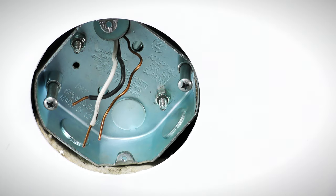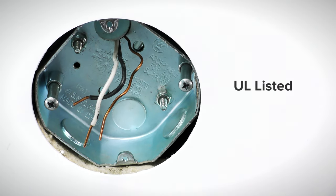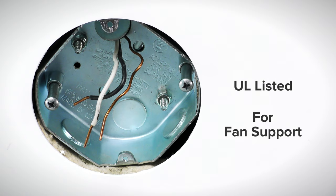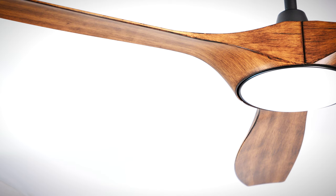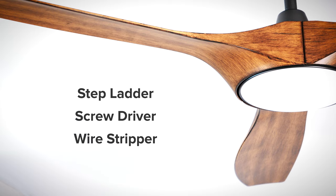To install the fan you will need a UL listed outlet box that is for fan support of up to 35 pounds. You will also need a stepladder, screwdriver, wire stripper, and electrical tape.